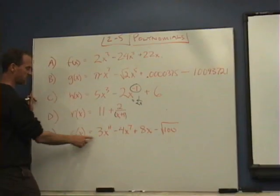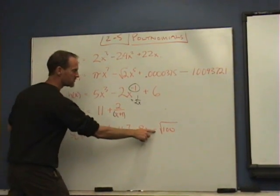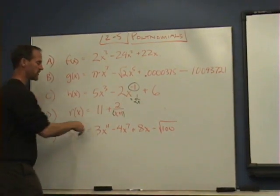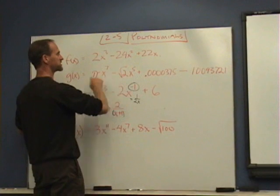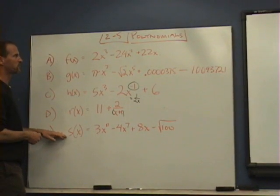This last one here: 3x^11 - 4x^7 + 8x - √100, well that's just 10 so there's no problem there. We might need to clean this up as we need to clean this one up and put it in standard form, but it still can be written as a polynomial.